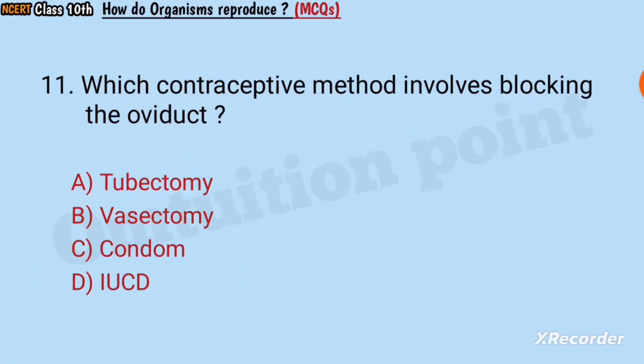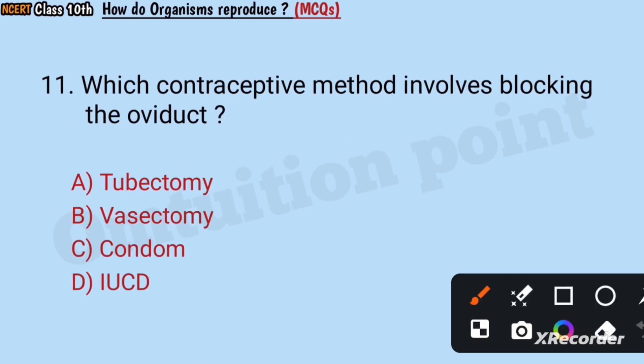Question number 11: Which contraceptive method involves blocking the oviduct? Tubectomy, vasectomy, condom, or IUCD? Answer: Tubectomy.